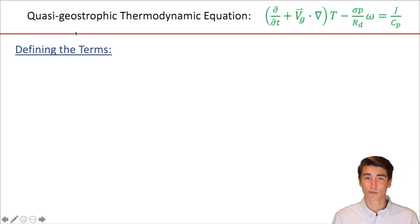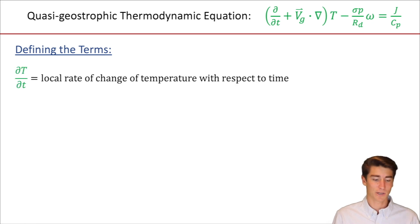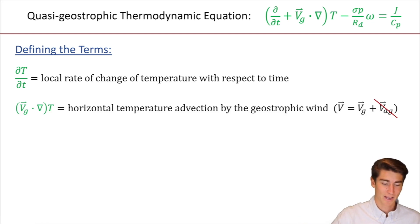So when talking about quasi-geostrophic equations, you usually throw out that ageostrophic term and just deal with geostrophic. The other symbol you see changed was this one right here, and we'll get into what that change represents. So let's define the terms. We already know our symbols. So dT/dt. Nice little confidence booster. We already know what this one is. Local rate of change of temperature with respect to time.